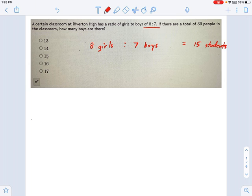But that doesn't work, because we're told there are 30 people in the room. So what other sorts of ratios would also be equivalent to 8 to 7? Well, what if there were 16 girls and 14 boys? I just multiplied those by 2. And if you add those up, that's 30 students.